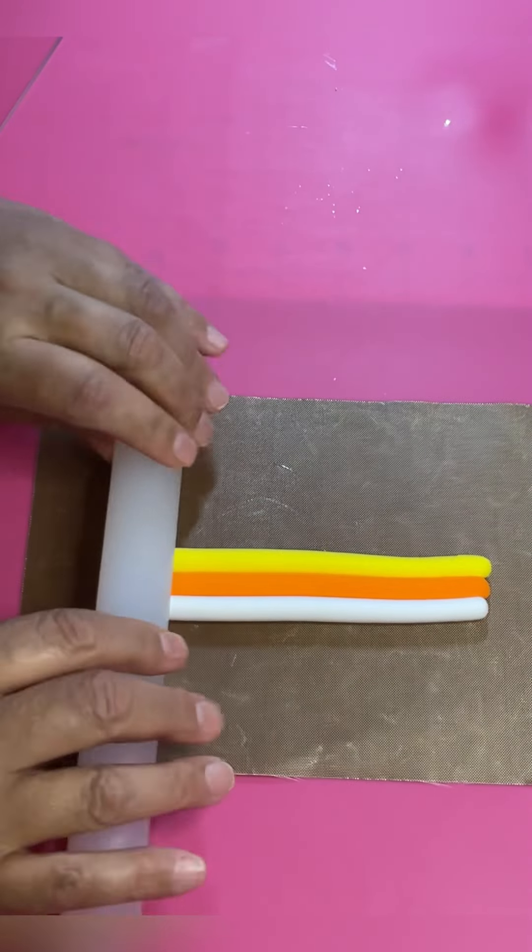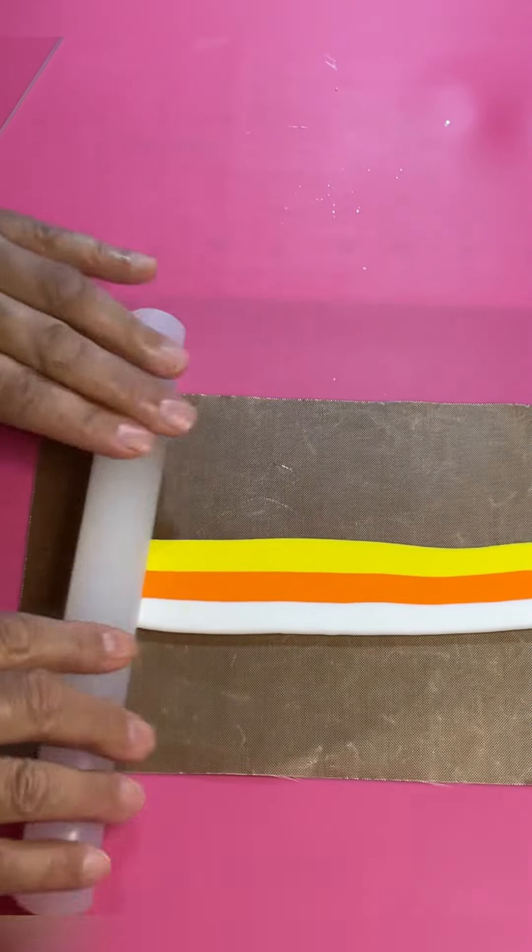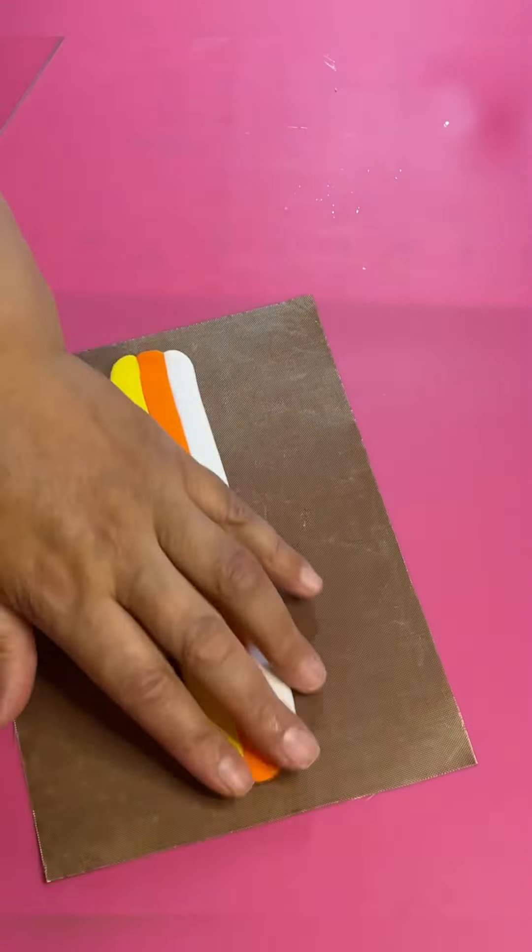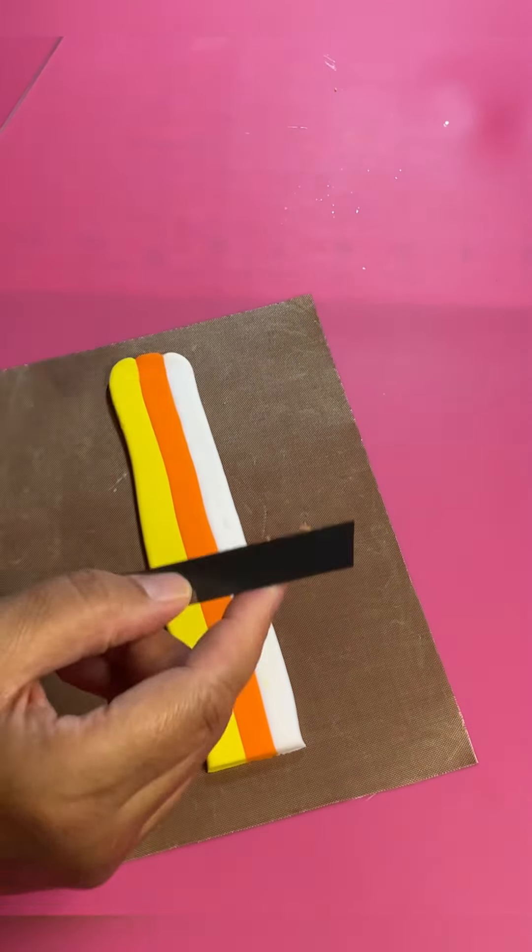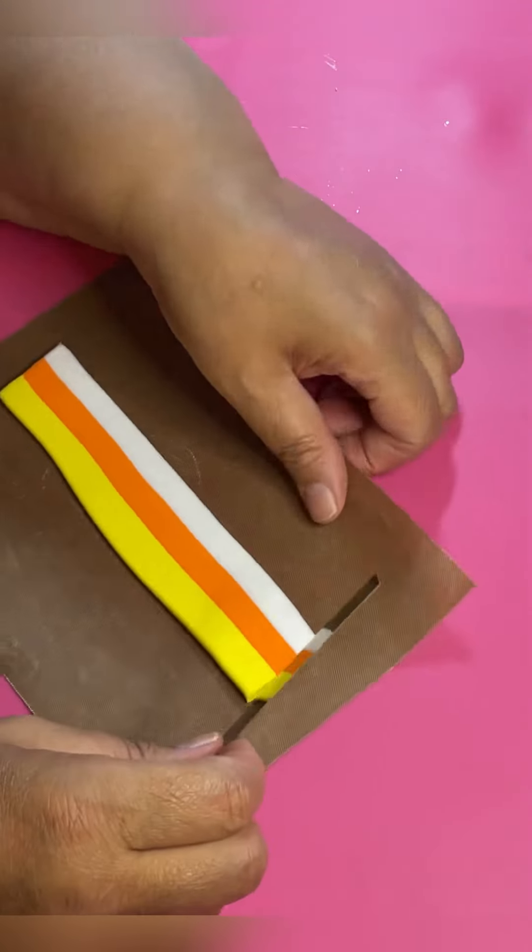You're going to take your rolling pin and you're just going to roll it flat. Now, do this slowly so that the ends don't stretch out too much. You can even out those edges if you want with your craft knife or clay slicer. I'm just going to leave it like that.